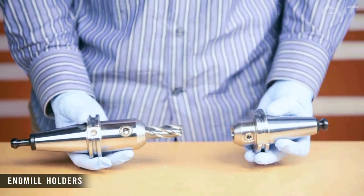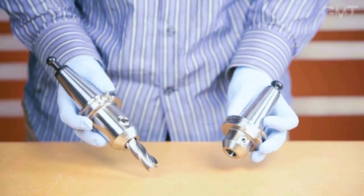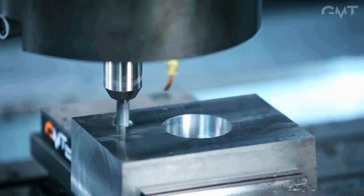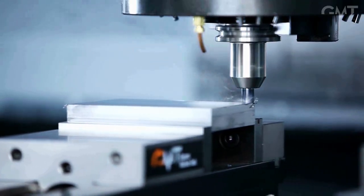A solid end mill holder consists of a precision bored hole and a set screw. The set screw clamps down on the weld-on flat of the end mill providing a very secure grip with a slight loss in concentricity.